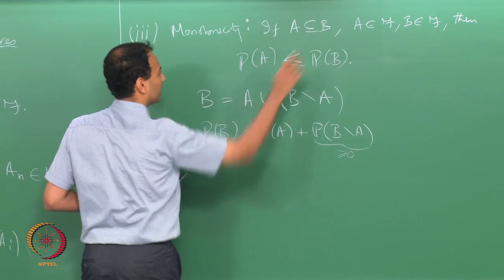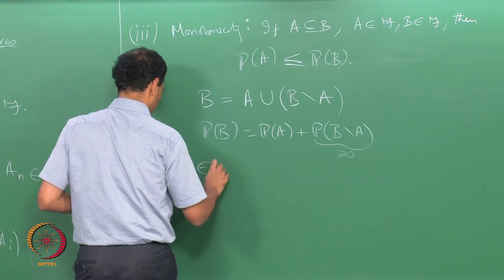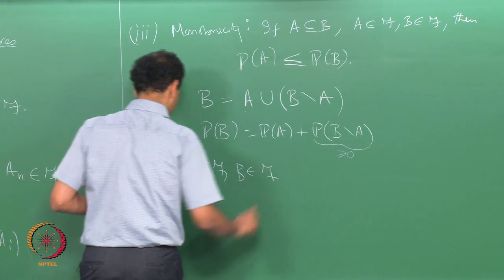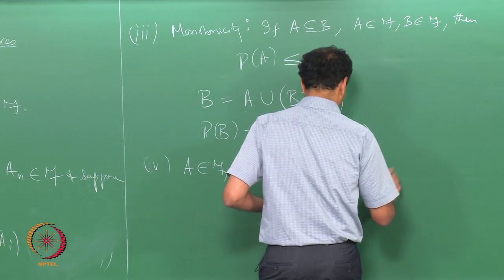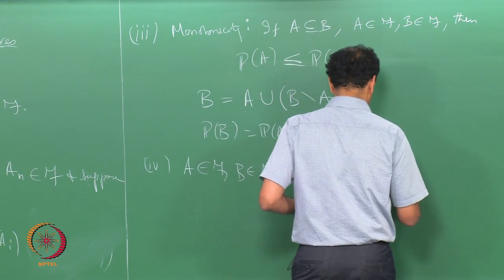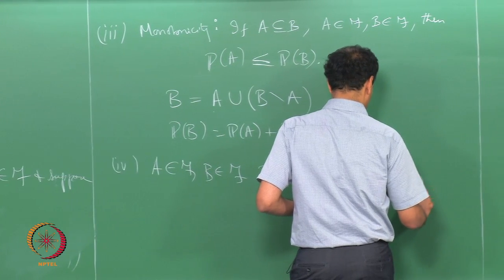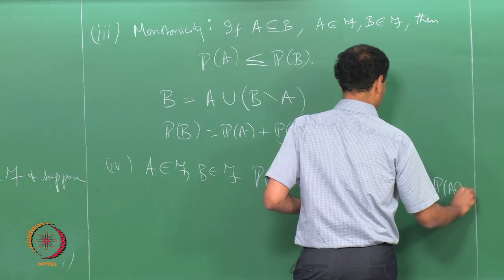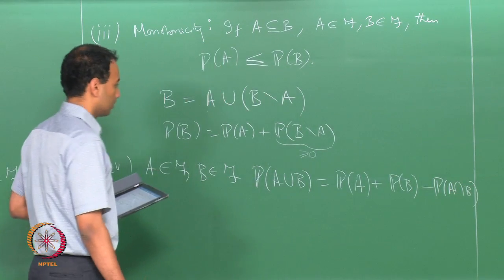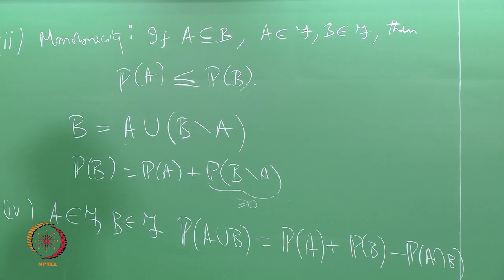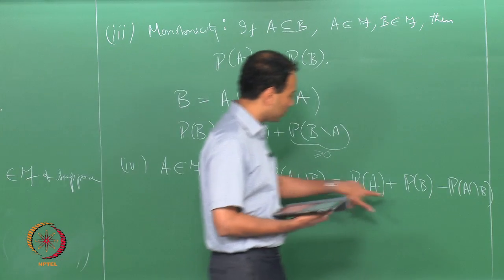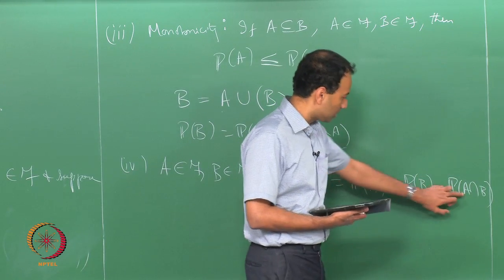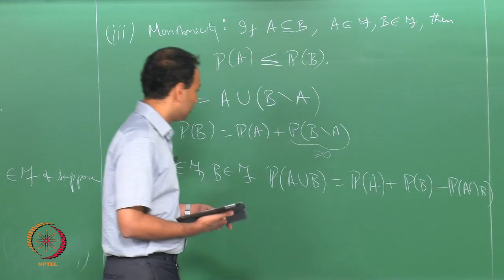The next property: if A is in F and B is in F, then the probability of A union B equals the probability of A plus the probability of B minus the probability of A intersection B. This says you can add the two probabilities and subtract the probability of the intersection, and of course A intersection B is also an element of F.